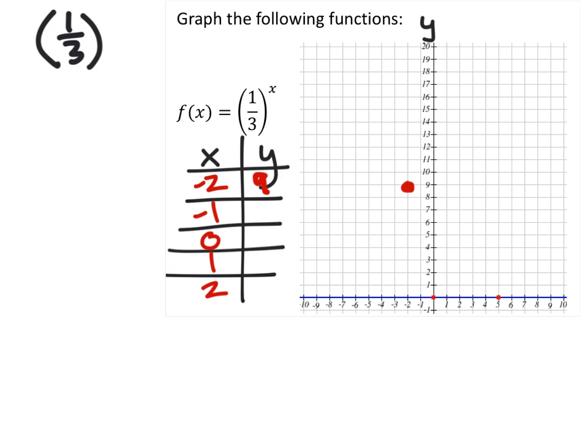Now we'll do the same thing, but with a negative 1. So we have 1 over 3 to the power of negative 1. It's really 1 to the negative 1, but 1 to any power is just 1. So we have 1 over 1/3. 1 divided by 1/3 is 3. So that gives us a 3 in the table. And at negative 1, we have a value of 3.